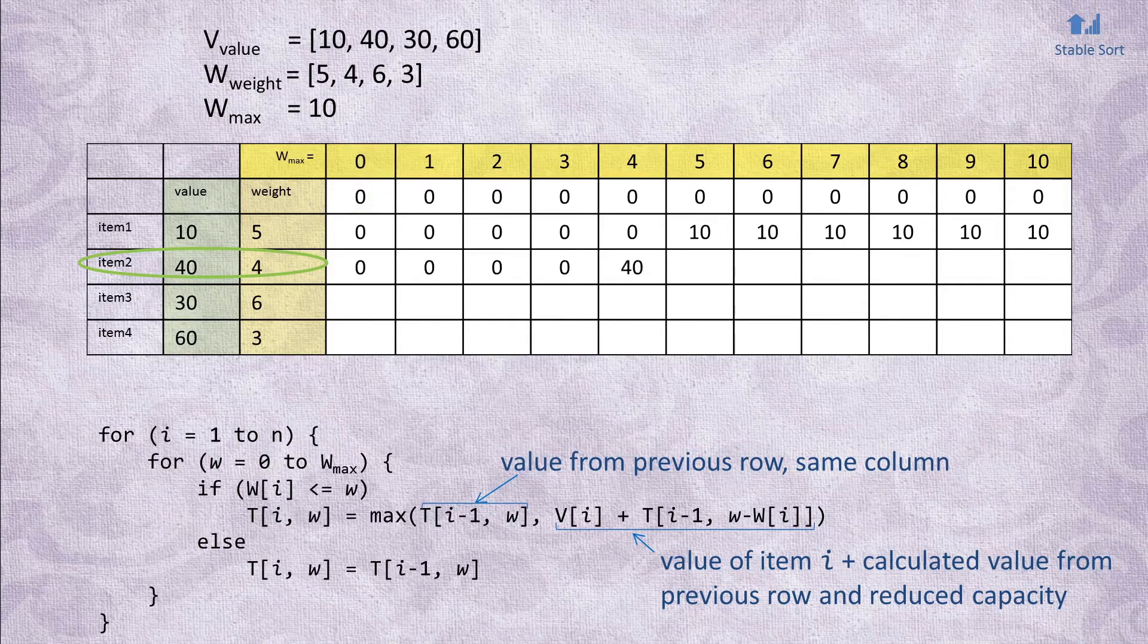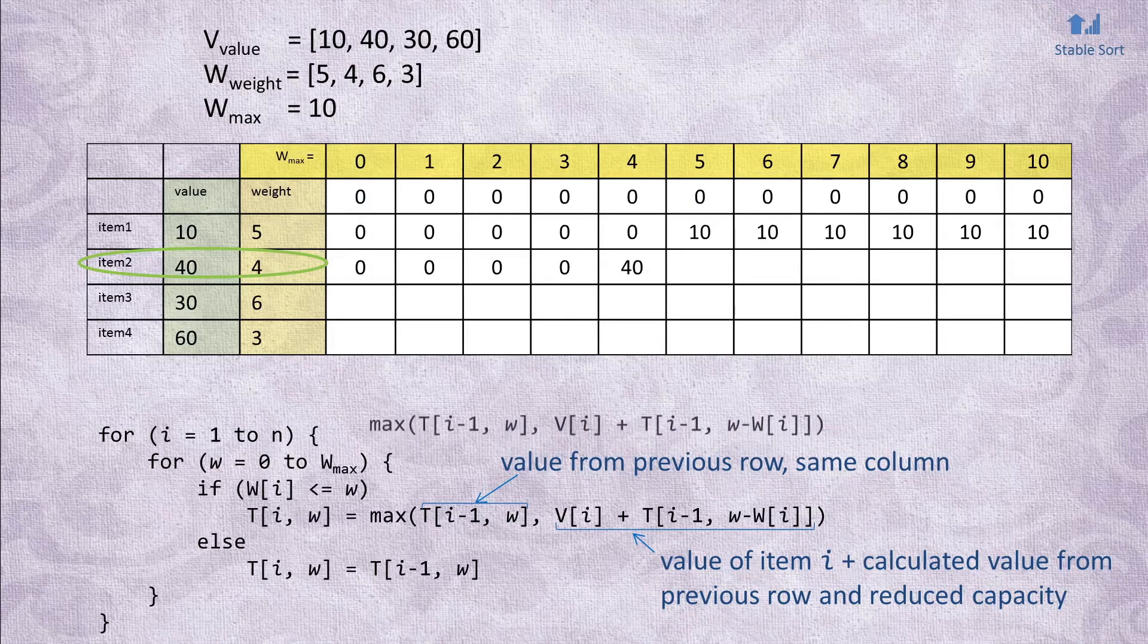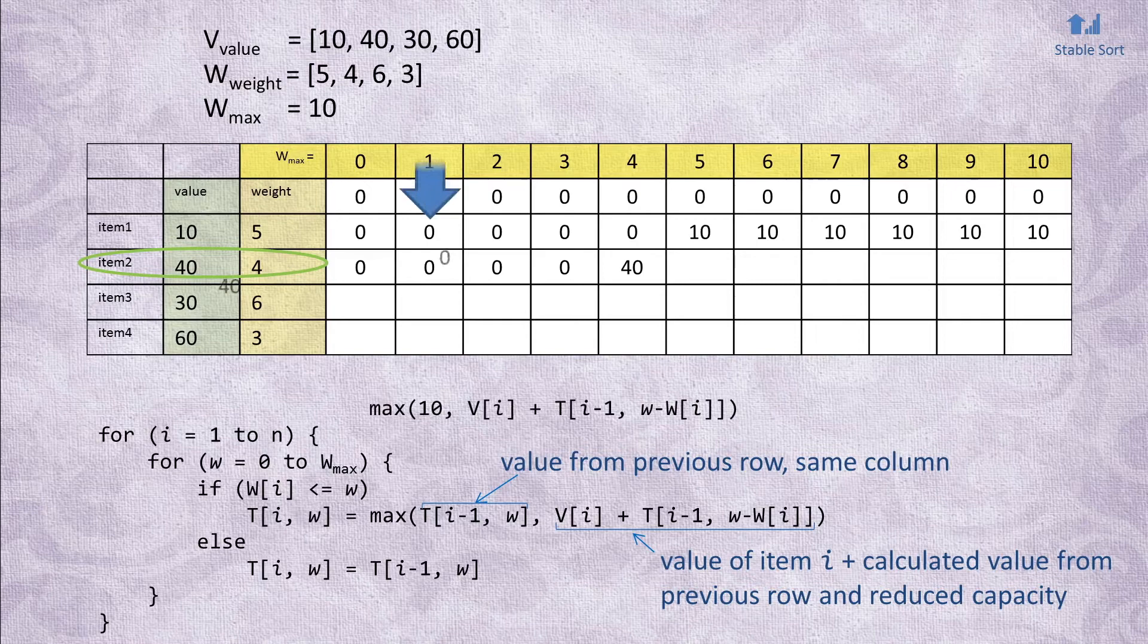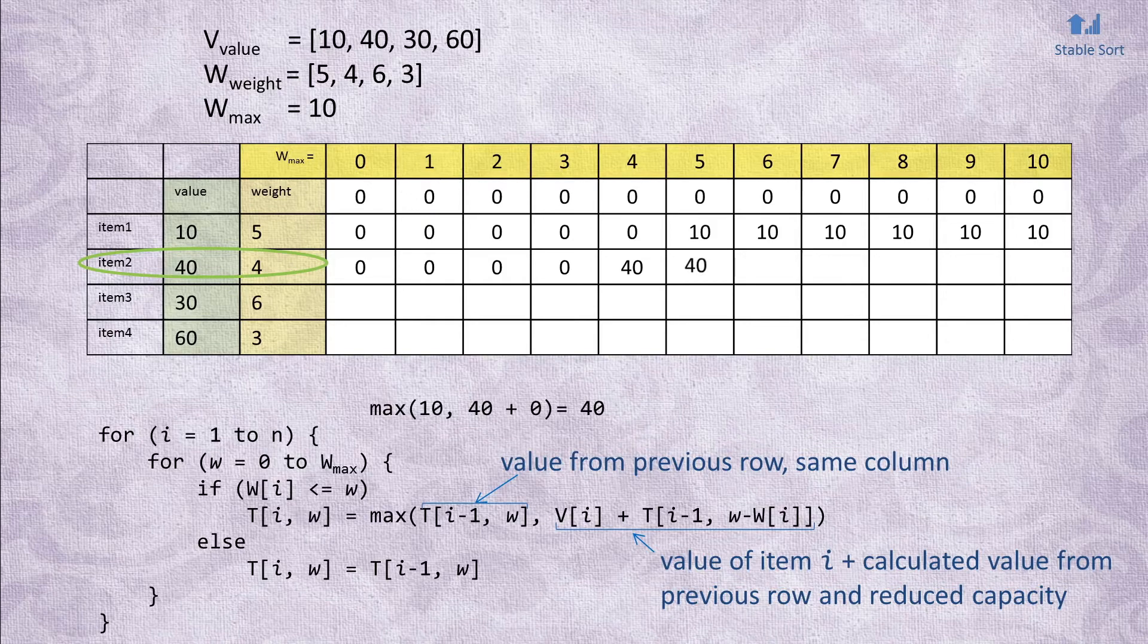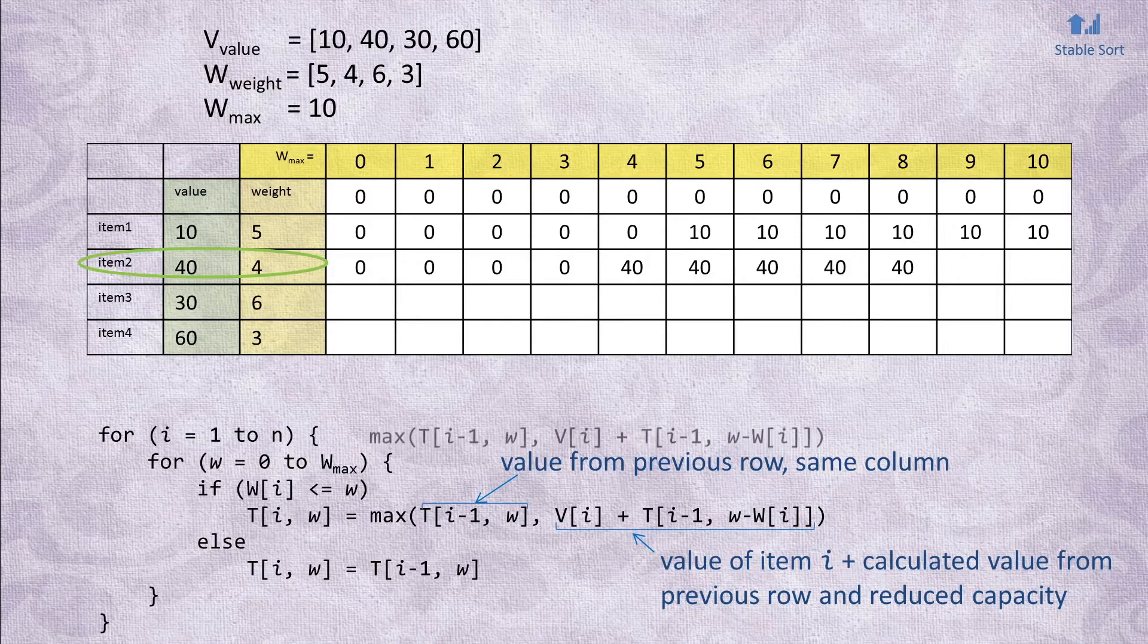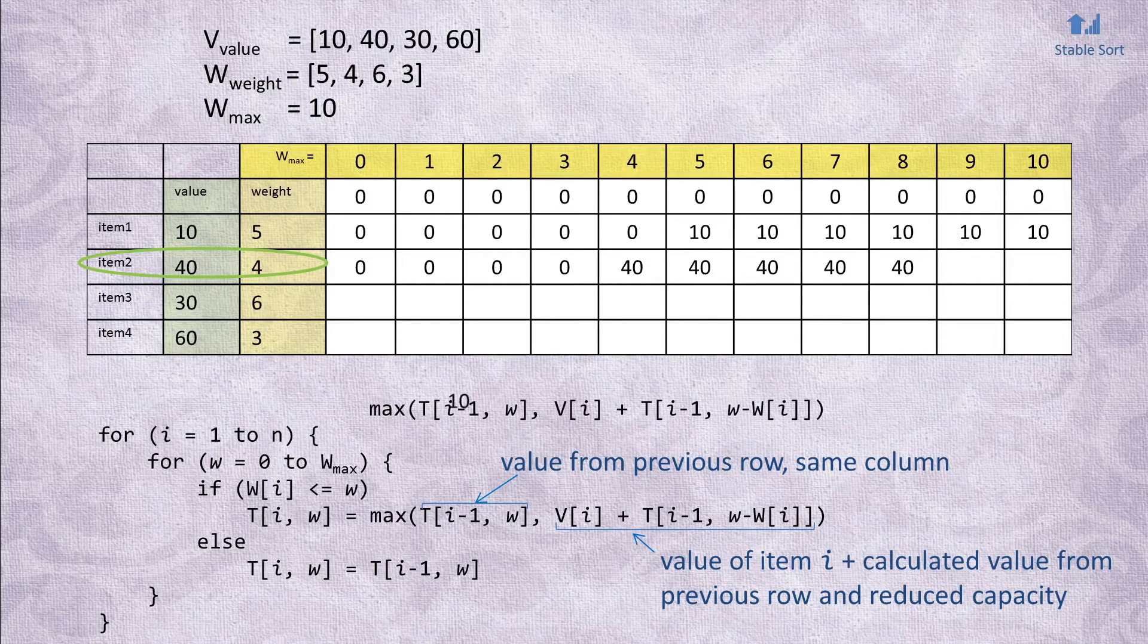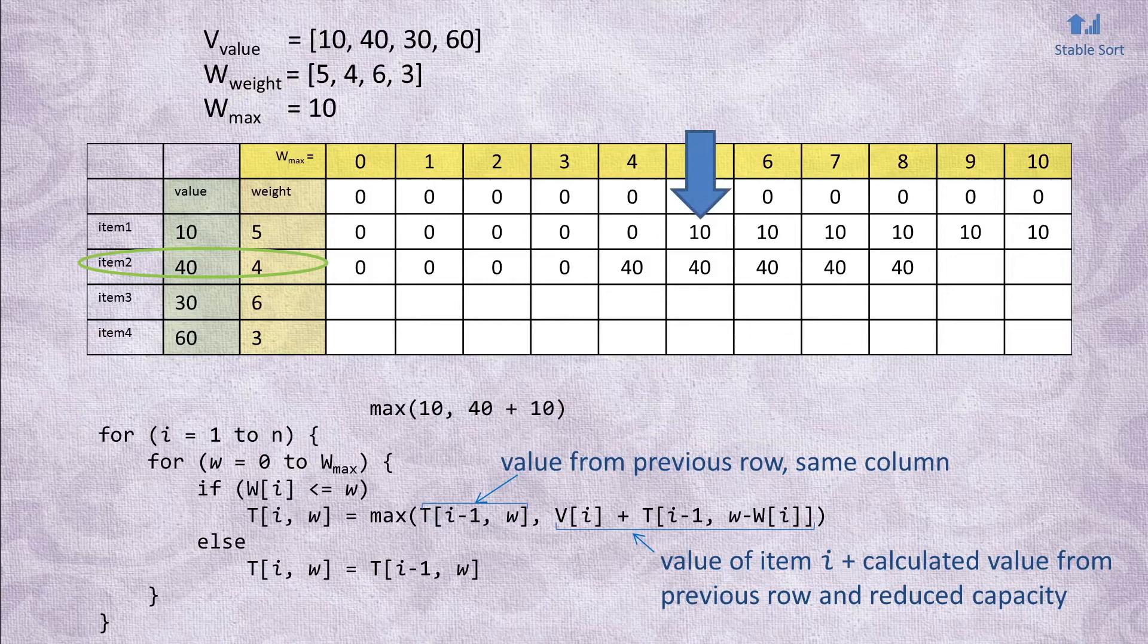Moving on, we'll be taking the max of the cell above with value 10, versus 40 plus value from column 1, row 1. 40 is greater than 10, so we write in 40. The same calculation holds true all the way till knapsack capacity is 9, at which point we can fit both of the items. Here, our formula compares the value of the cell above, versus 40 plus 10.